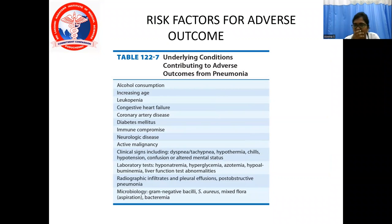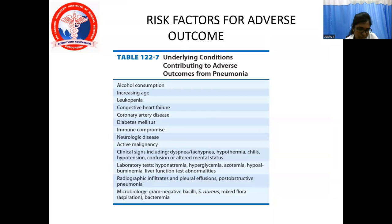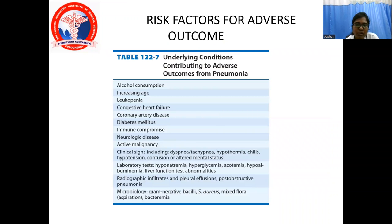Factors for adverse outcome in pneumonia include alcohol consumption, increasing age, leukopenia, congestive heart failure, coronary artery disease, diabetes mellitus, immunocompromised state, neurological disease, active malignancy. Clinical signs include dyspnea or tachypnea, hypothermia, chills, hypotension, confusion, or altered mental status. Lab findings include hyponatremia, hyperglycemia, azotemia, hypoalbuminemia, abnormal liver function tests, radiological infiltrates and pleural effusions, post-obstructive pneumonia, and on microbiology — gram-negative bacteria. If any of these features are present, the patient is at risk of deterioration and adverse outcome.